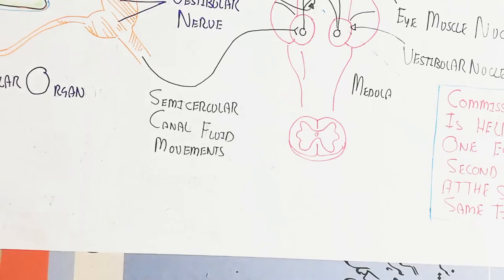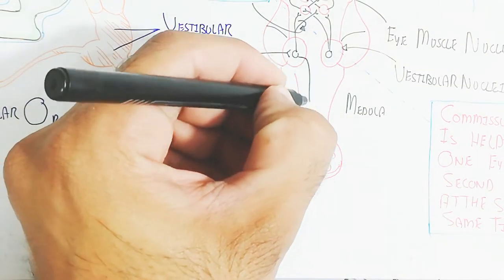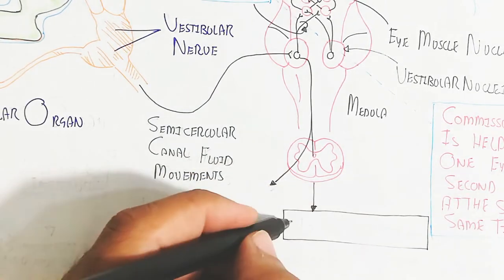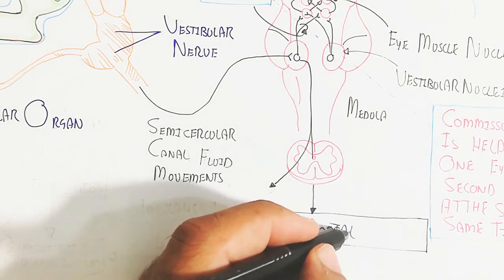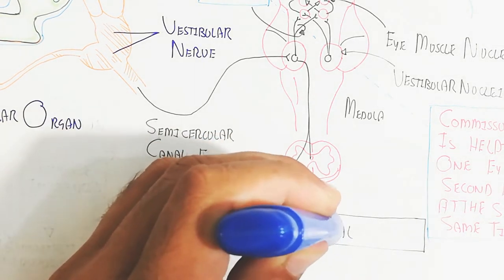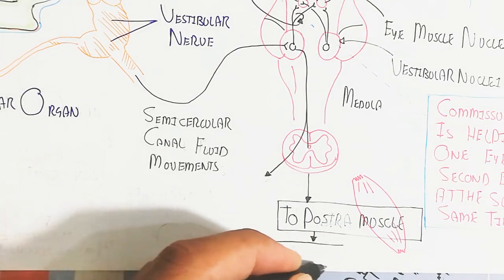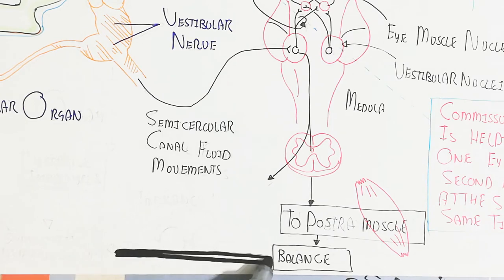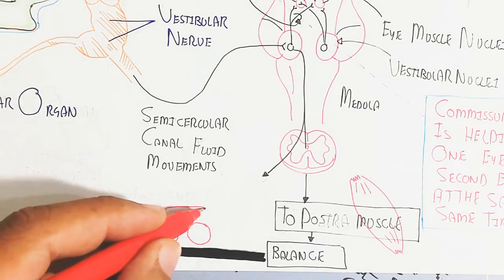The vestibular nuclei also transmit signals through neurons down to the spinal cord, reaching the peripheral nervous system and muscles via the neuromuscular junction. This maintains the postural muscles and maintains posture. This is the result of balance when we are walking, sitting, or sleeping — balance is continuously regulated through this pathway.